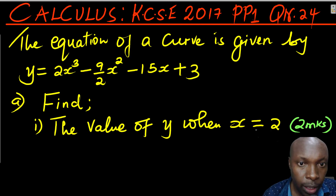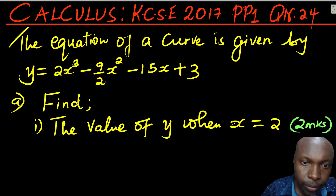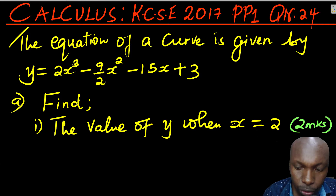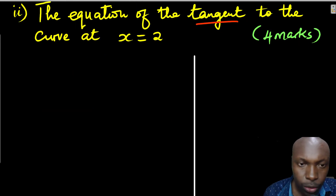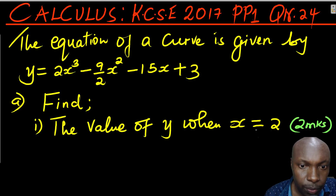Welcome to the lesson on Calculus. The equation of a curve is given by y equals 2x cubed minus 9 over 2 x squared minus 15x plus 3. Question A: find one, the value of y when x equals 2; two, the equation of the tangent to the curve at x equals 2; and three, determine the turning point of the curve.